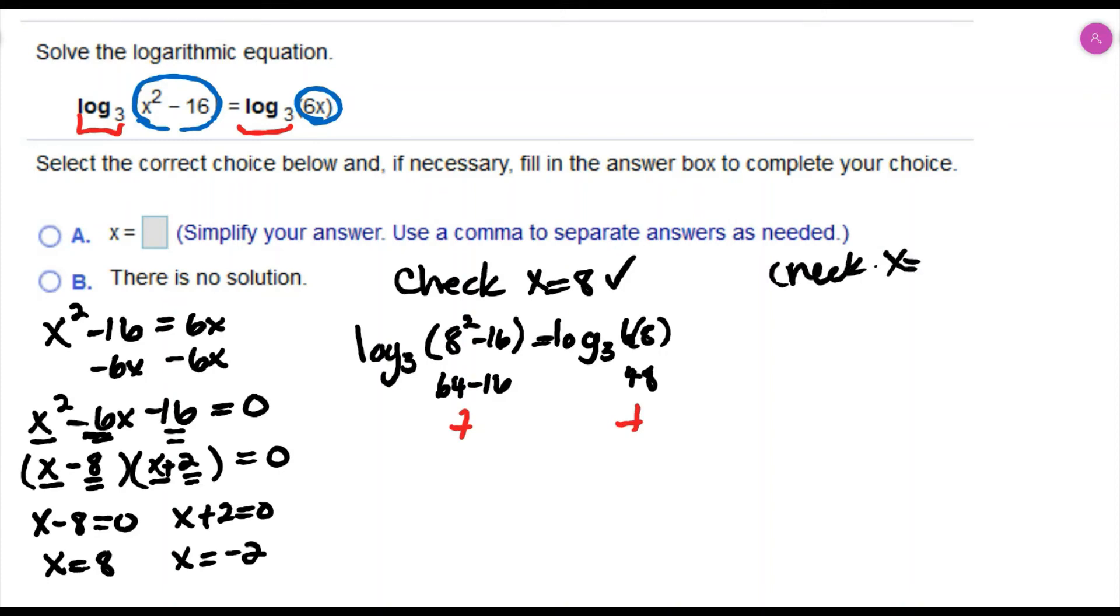Let's check x equals negative 2. Log base 3 of negative 2 squared minus 16 and log base 3 of 6 times negative 2. This gives me 4 minus 16, that's going to come out to be a negative, and you cannot take the log of a negative, it's undefined. So we're going to have to throw away that answer, so the only solution is going to be x equals 8.